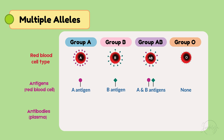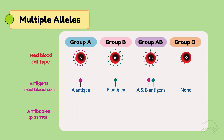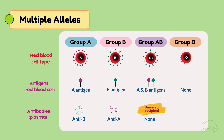Your immune system makes antibodies, which act like security guards — they recognize foreign antigens and attack them to protect the body. Type A has anti-B antibodies. Type B has anti-A antibodies. Type AB has no antibodies, making you the universal recipient.